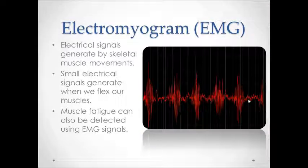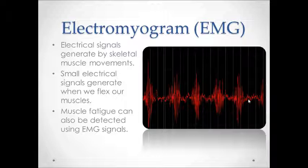Now let's talk a little bit about EMG signals. Electromyogram, or EMG signals, are electrical potentials produced by our skeletal muscles like our bicep, tricep, or forearm muscles. When we flex these muscles or a muscle contraction happens, there are sudden increases in amplitude of the signals which can be collected and classified. We can even measure muscle fatigue through EMG signals — when our muscles get fatigued, the amplitudes get even larger. In the figure, the spikes are EMG signals every time you grind your teeth.